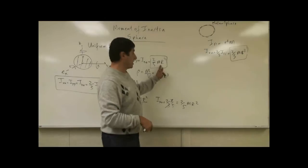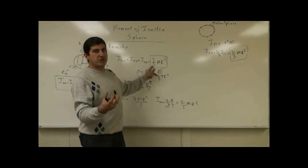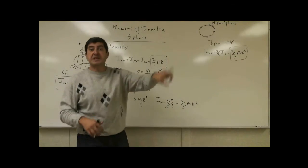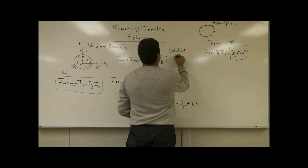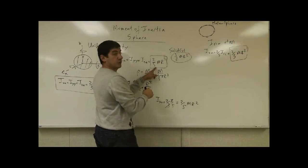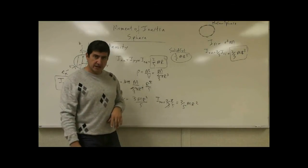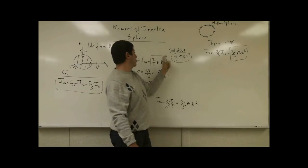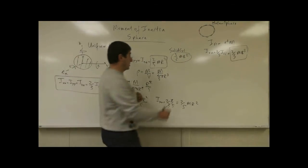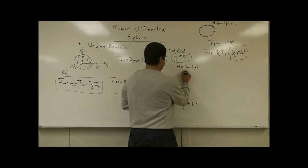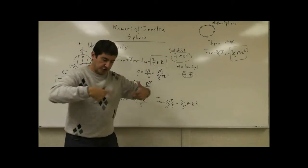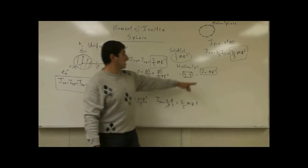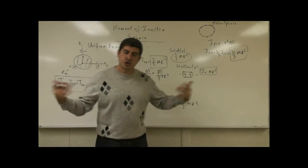The moment of inertia of a solid sphere is two-fifths m r squared and the hollow sphere is two-thirds m r squared. If they race down a hill, the solid sphere wins because two-fifths is a smaller ratio than two-thirds. The solid sphere also beats a solid cylinder, whose moment of inertia is one-half m r squared, since two-fifths is less than one-half. The solid cylinder beats the hollow sphere. The hollow cylinder, with moment of inertia m r squared, is the slowest — it loses to all of them.